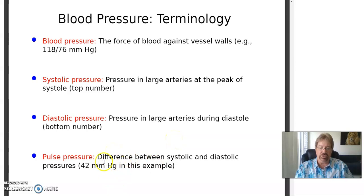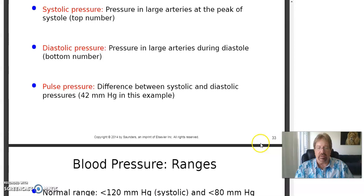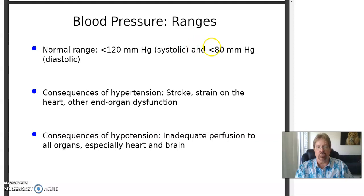So, like 120 over 80, the pulse pressure would be 40 millimeters of mercury. Blood pressure is measured in millimeters of mercury — how far will it push mercury up that tube? Although nowadays a lot of them don't have mercury. Normal range in adults is 120 over 80, or less than 120 over 80.